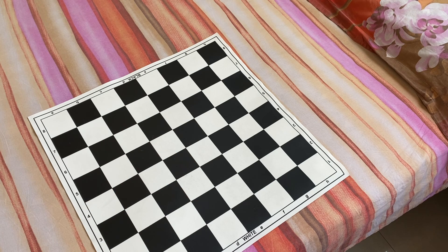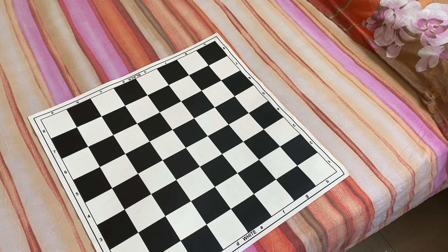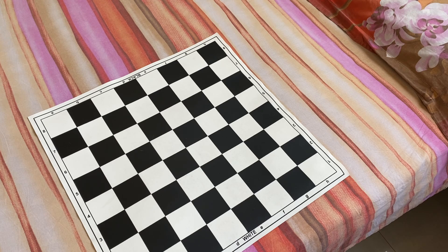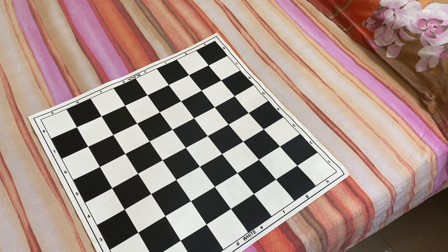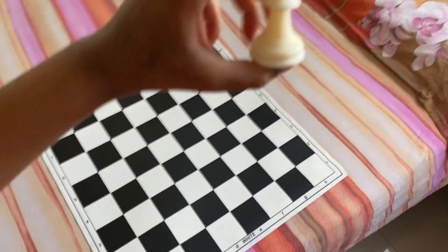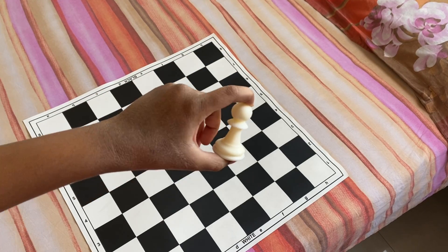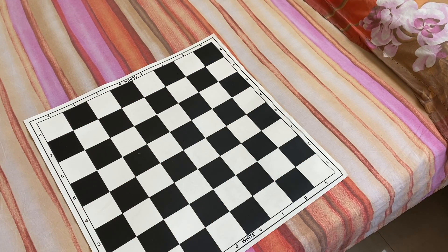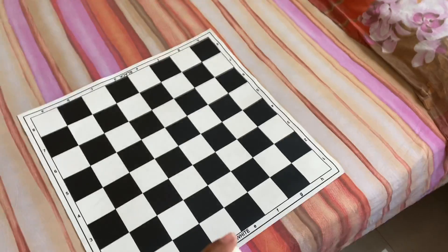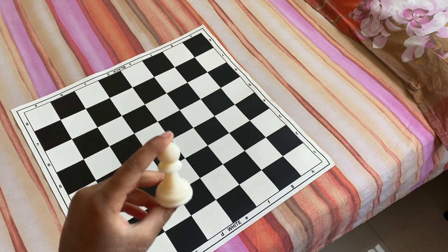Okay, now let me tell you the rules of this pawn. First of all, what is this small piece? So this small piece is called the pawn, and there will be 8 pawns with each player.